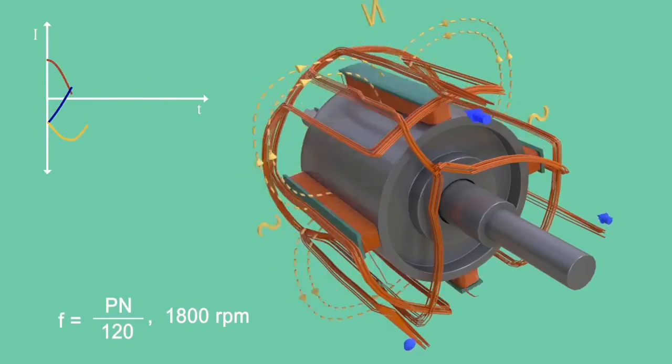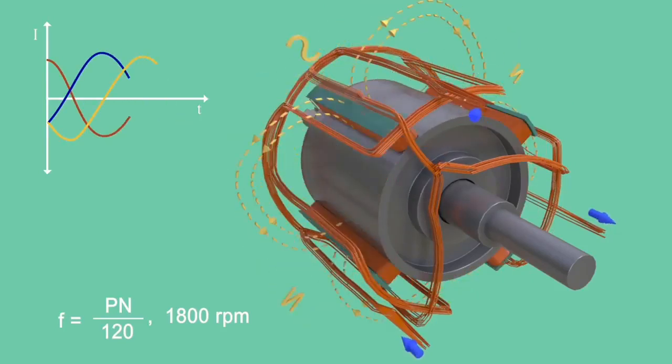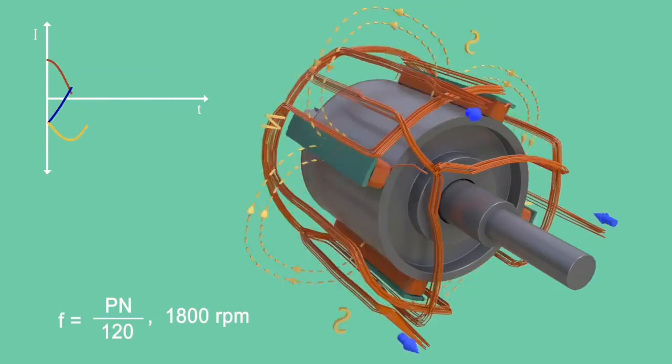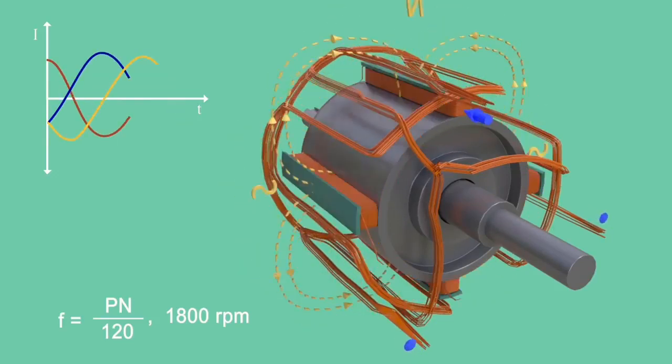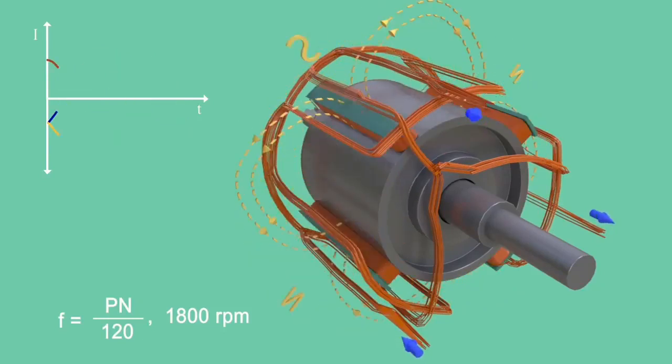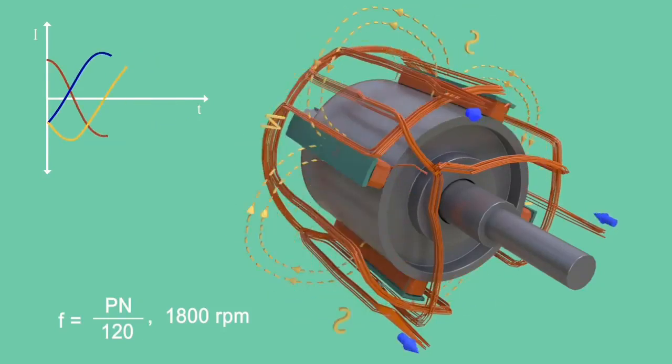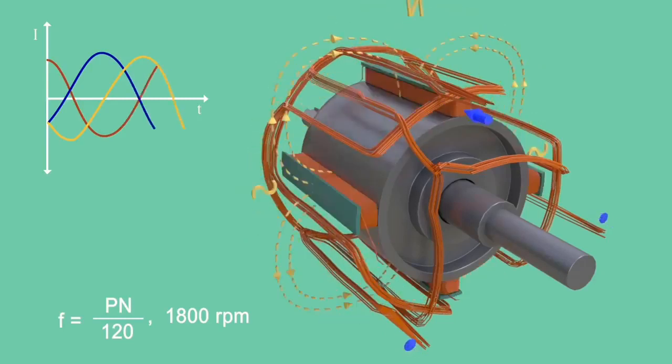So salient pole rotors generally have 10 to 40 poles, which demands lower rpm. Salient pole rotors are used when the prime mover rotates at relatively lower speed, 120 to 400 rpm, such as water turbines and diesel engines.